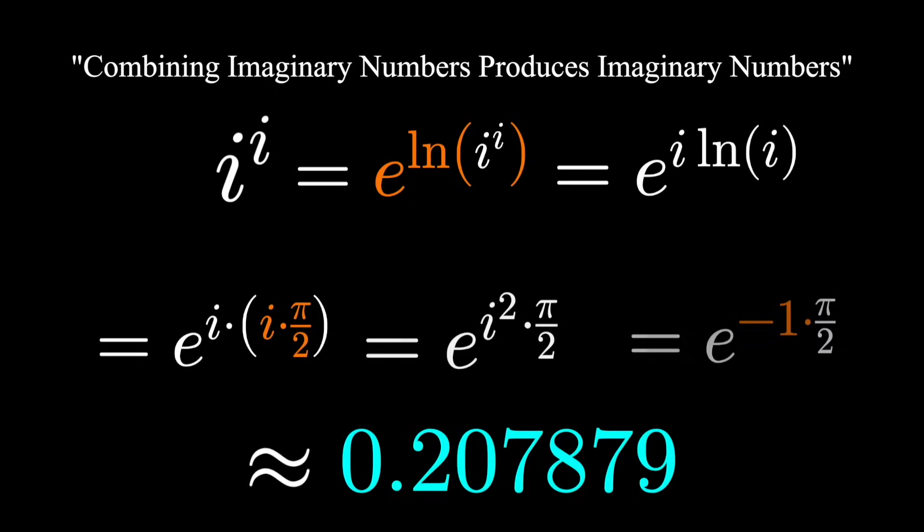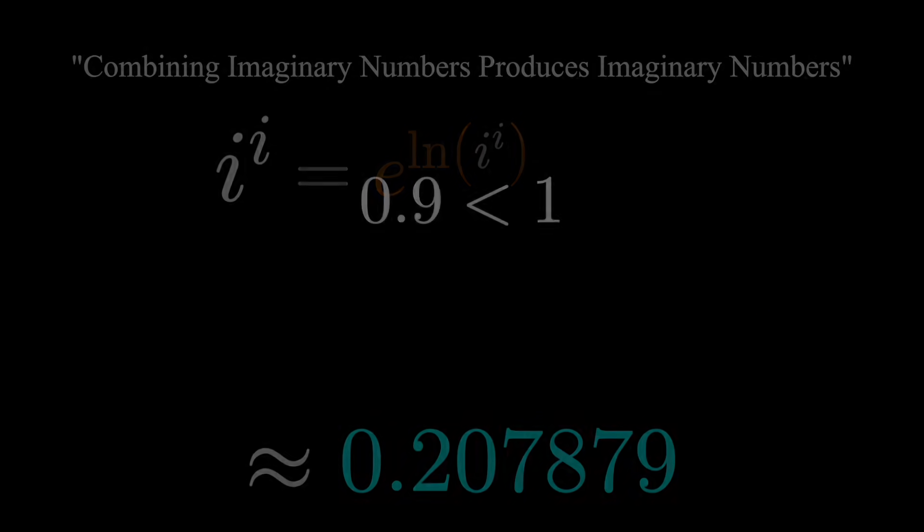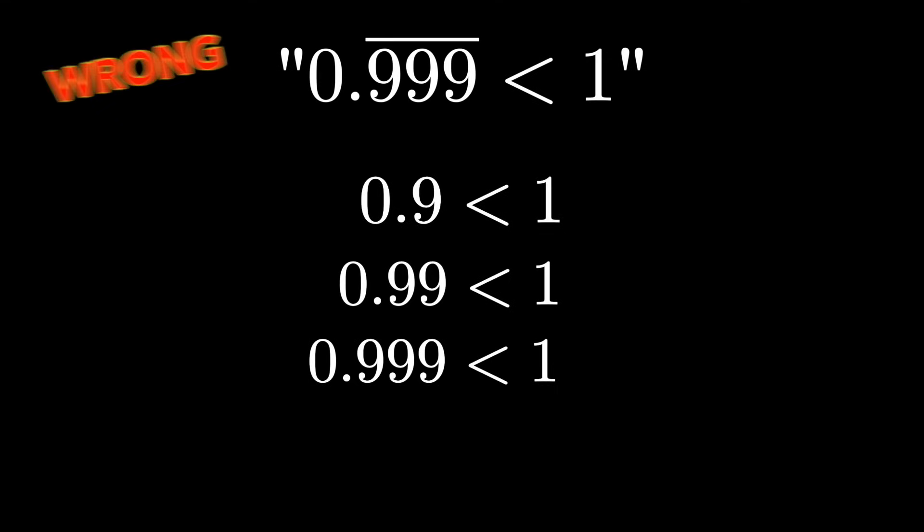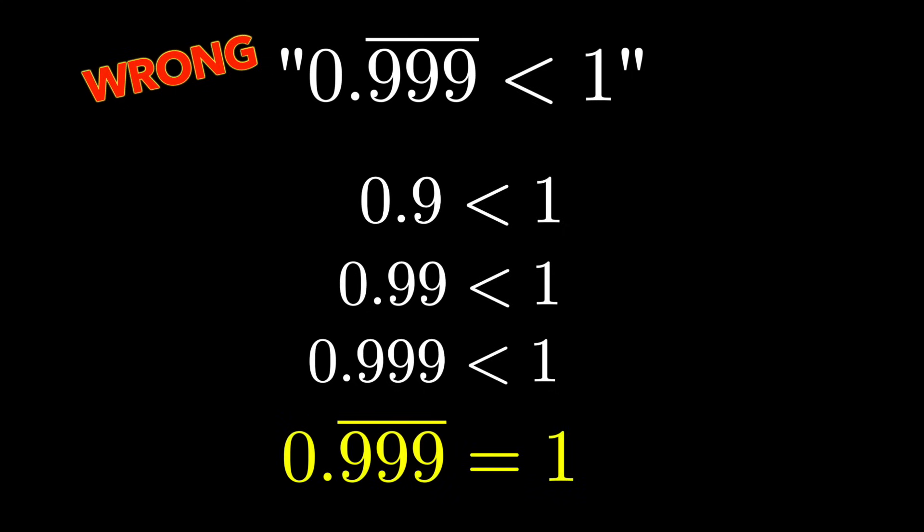But here's a really obvious one. 0.9 is less than 1, 0.99 is less than 1, 0.999 is less than 1, 0.999 repeating forever is also less than 1. I can feel the controversy brewing already, but I will stand on this fact that these numbers are equal. And I will prove it to you in this video. This is a definitive video, in my opinion, with a rigorous proof. Click the video to check it out. I'll see you in that one.